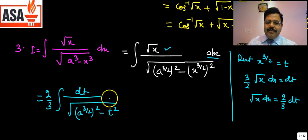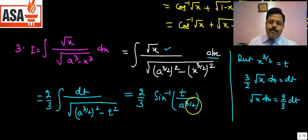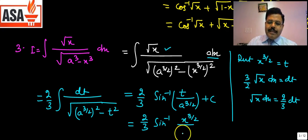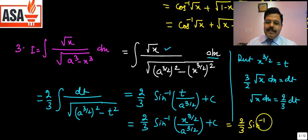Substituting back t = x^(3/2), the answer is (2/3) sin⁻¹(x^(3/2) / a^(3/2)) + c, which can also be written as (2/3) sin⁻¹((x/a)^(3/2)) + c.